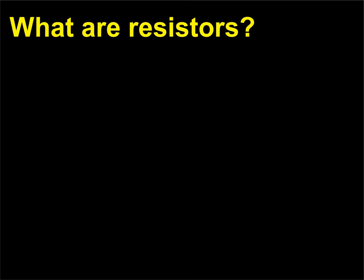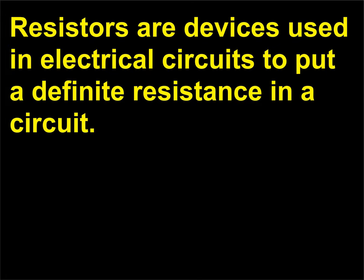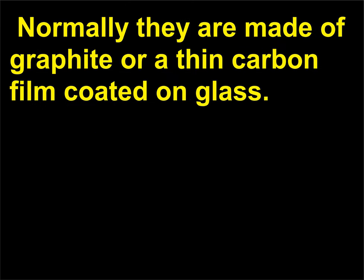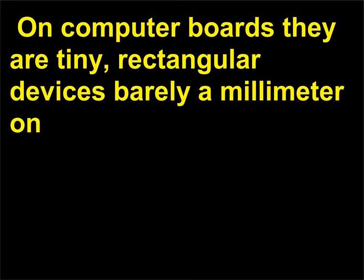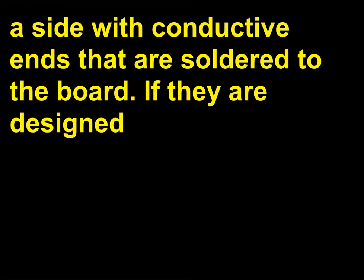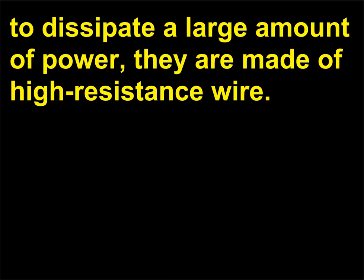What are resistors? Resistors are devices used in electrical circuits to put a definite resistance in a circuit. Normally they are made of graphite or a thin carbon film coated on glass. Larger resistors are cylindrical and have four color bands that encode the value of the resistance. On computer boards they are tiny rectangular devices barely a millimeter on a side, with conductive ends soldered to the board. If they are designed to dissipate a large amount of power, they are made of high-resistance wire.